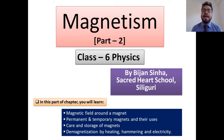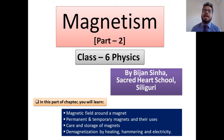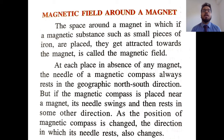Hello, dear children of class 6. I hope you all are fine. As you remember, we are discussing the 6th chapter of your physics — Magnetism. In the first part we discussed what magnets are, what magnetism is, and a few properties of magnets. In this part we are going to discuss magnetic field around the magnet, permanent and temporary magnets and their uses, care and storage of magnets, and finally demagnetization by heating, hammering, or passing electricity.